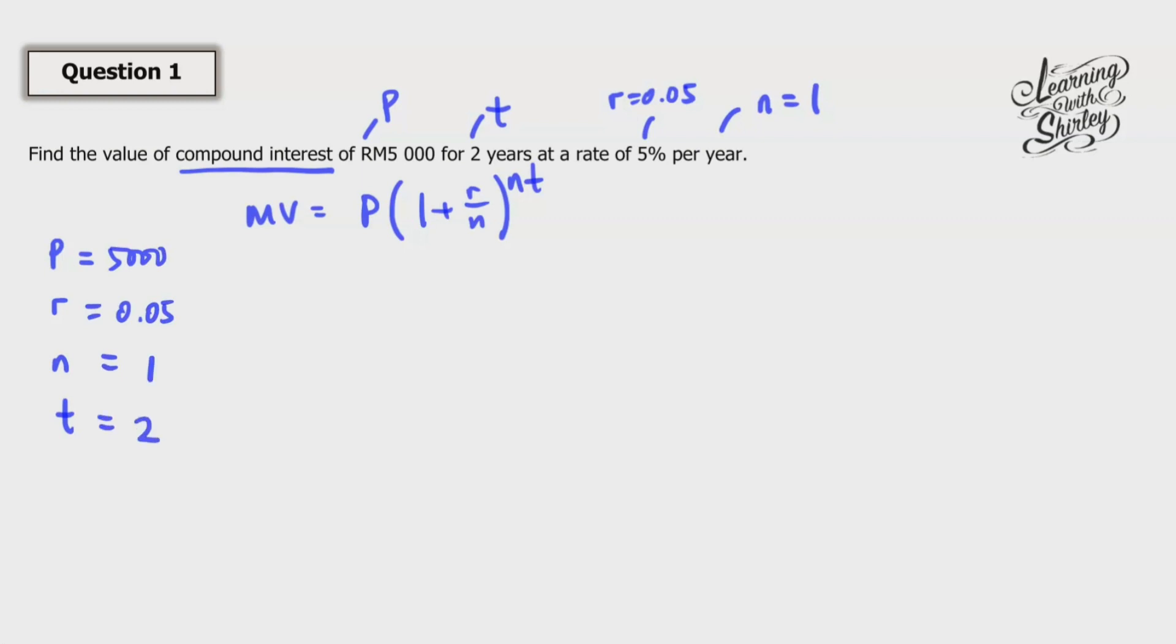So I'm going to substitute into the formula. So P is 5000. Then bracket 1 plus r is 0.05 and the n is 1, to the power of nt. So it's 1, 2.